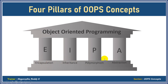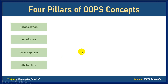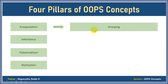We'll see which pillar talks about which concept. Encapsulation talks about grouping of similar functionalities into a class. Encapsulation mainly focuses on grouping of similar functionality into a class for security reasons, for modularity reasons, and for reusability. So we group similar functionalities into a class — that is encapsulation.